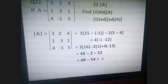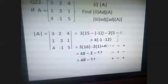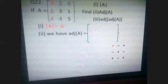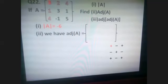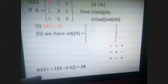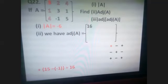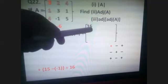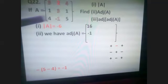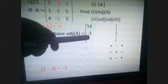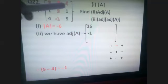So determinant of A is calculated to be minus six. Now we have the adjoint of A. To write the adjoint directly, without going through the cofactor matrix: we find the cofactors of each row and write them column-wise. Cofactor of 3, that is A11, is calculated to be 16 and is written here. Further, cofactor of 2, that is A12, is calculated to be 5 minus 4, that is minus one, and that is written here.